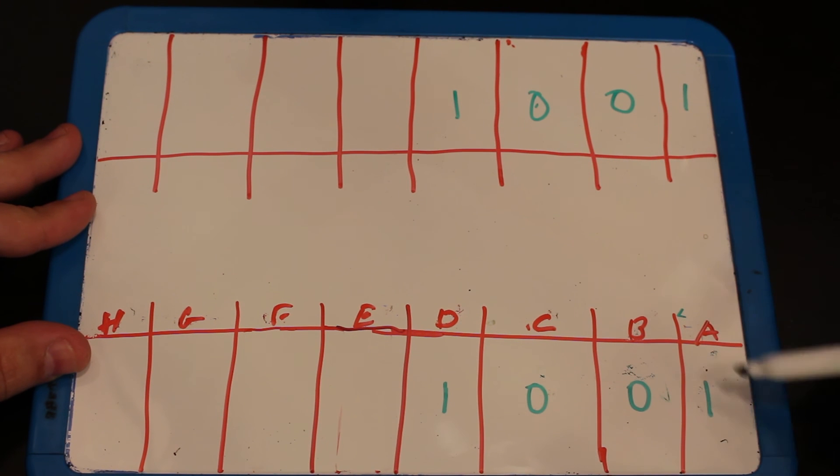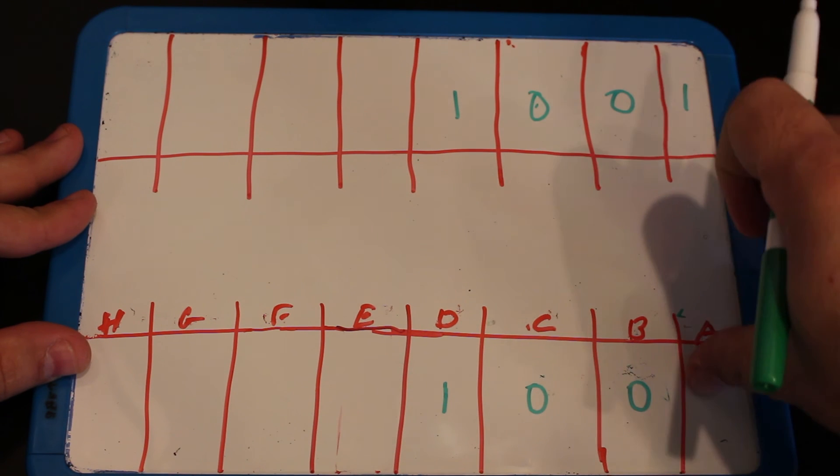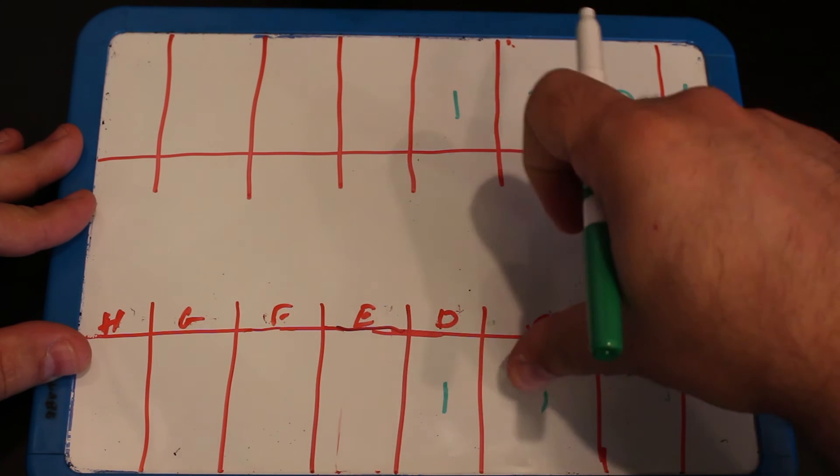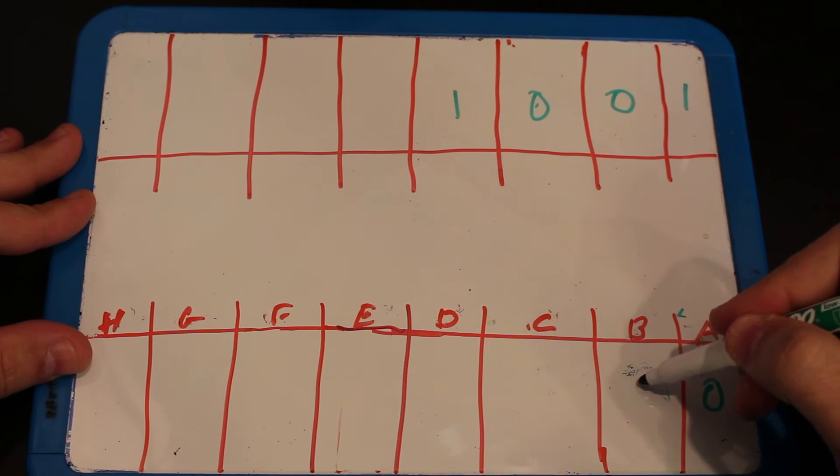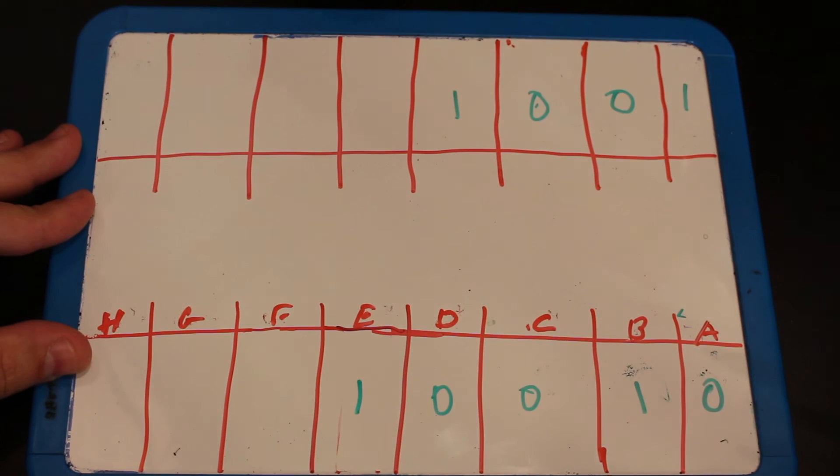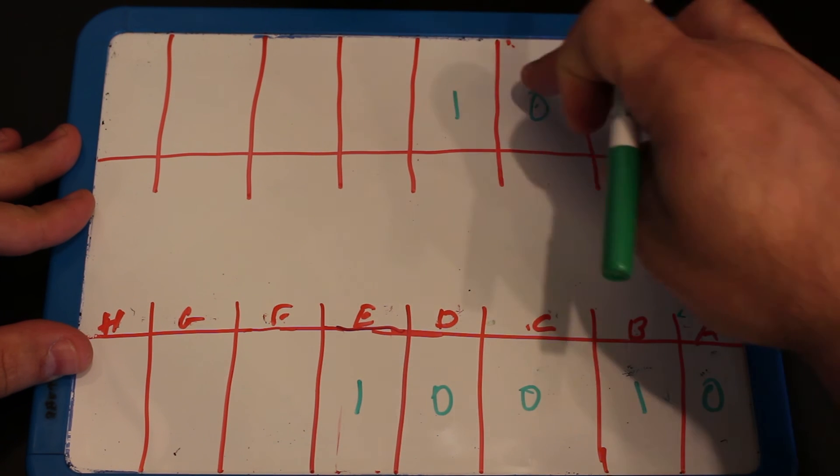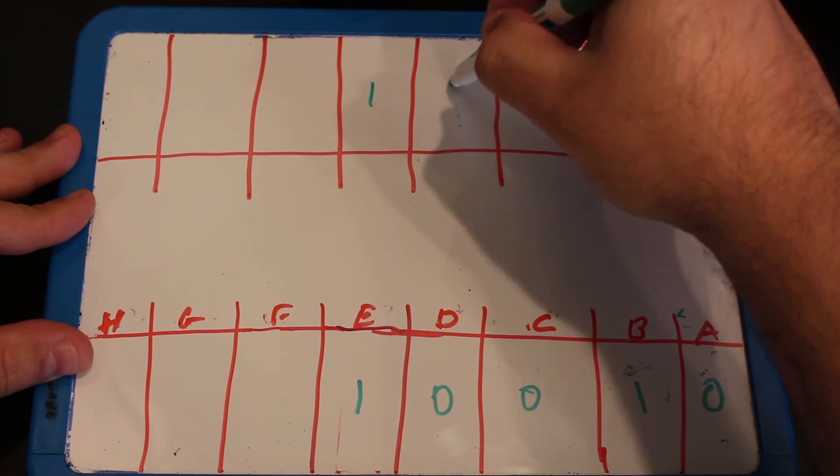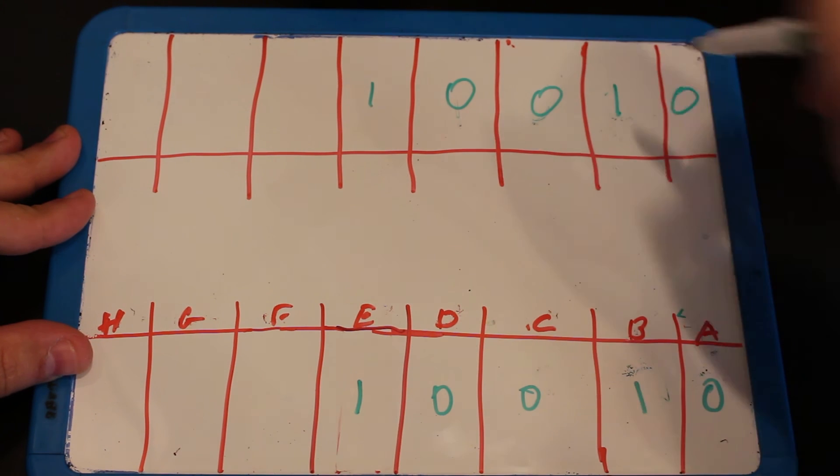Now if we send another bit, because we didn't clear this, everything will be actually shifted. So if we'll say we send a zero over here, we had one zero zero one. Now if we'll latch, we'll have the same values.